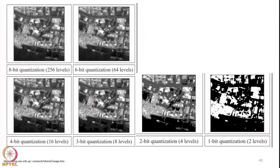The number of quantization bits provided for every pixel of data determines how many different gray levels we can get. In the figure shown, we have the same image with different quantization levels. Here we use 8 bits — so 2 to the power 8, values 0 to 255. Here it is 6 bits, so 2 to the power 6. Here it is 1 bit, so 2 to the power 1, just 2 levels. Each image is the same area represented with different quantization levels.